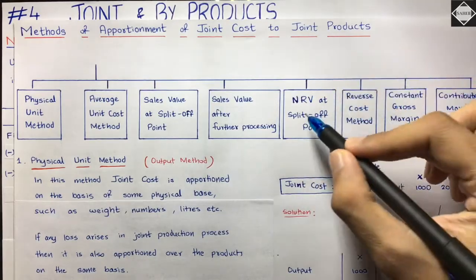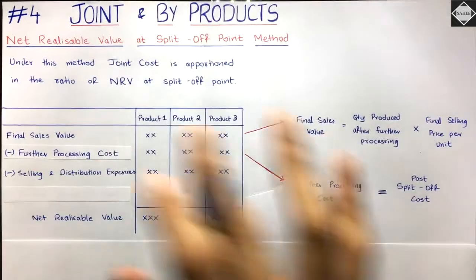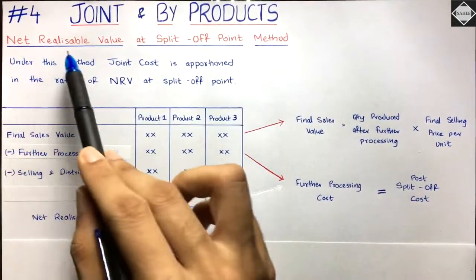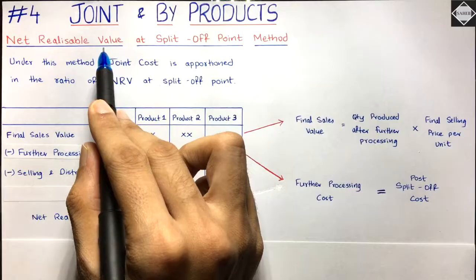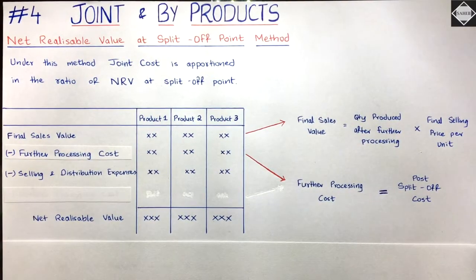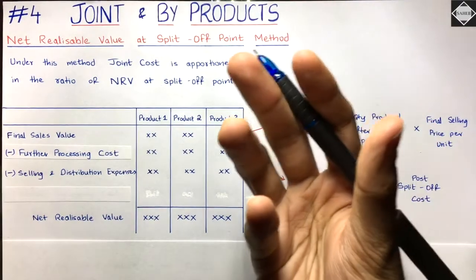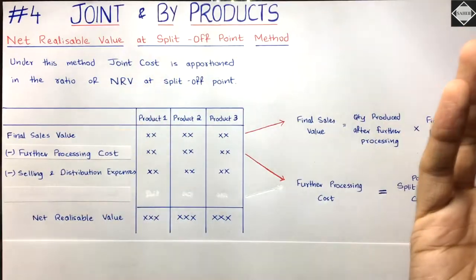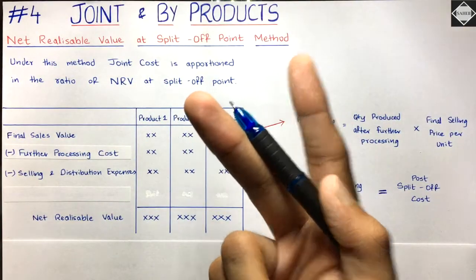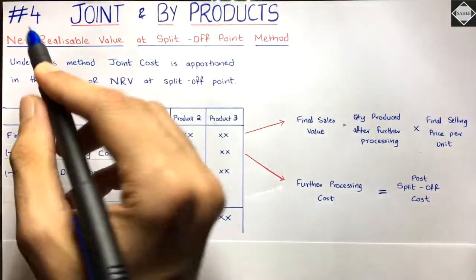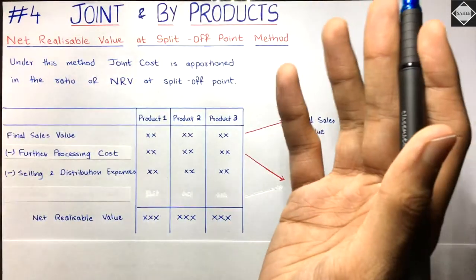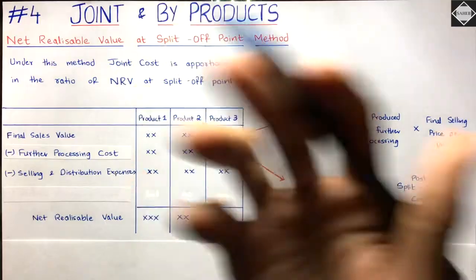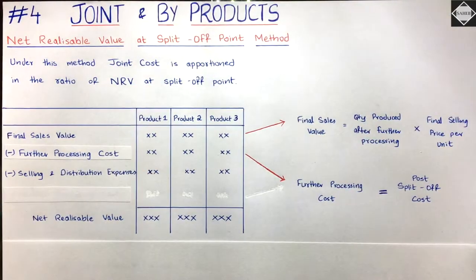Now let's understand the NRV at Split-off Point method. Do you know the meaning of Net Realizable Value? What is realizable value? Very simple - it is just the sale value. For example, if you want to sell an asset and you go to the market and get 20,000 rupees, then that 20,000 rupees is the realizable value. Now what is net realizable value? Net means we have to subtract something from the sales value.